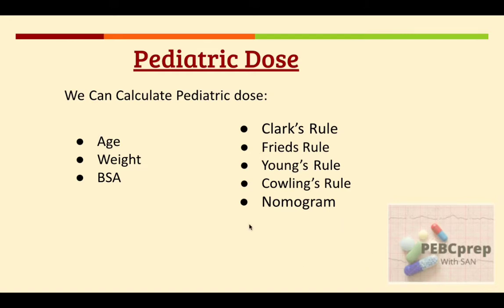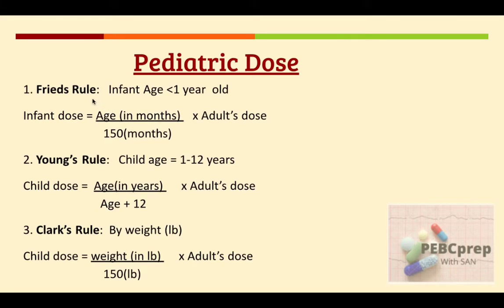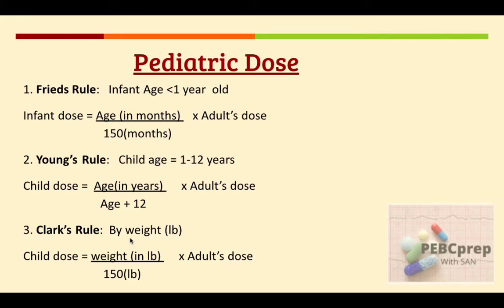The nomogram is basically based on body surface area. Always remember that Fried has an 'i' in its spelling, and this is for infant dose — that is, age less than one year old. When we have age less than one year in a question, we apply Fried's rule. For children between one year to 12 years, we apply Young's rule.